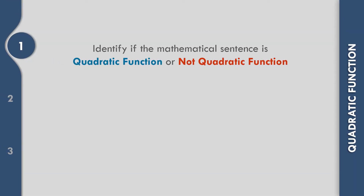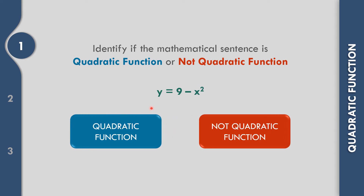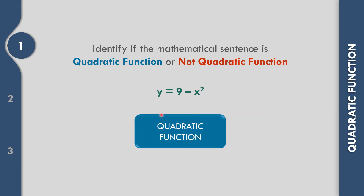In example number 1, let us identify if y equals 9 minus x squared is a quadratic function or not. This one is a quadratic function. Why? As you can see in the given, we have y, and the highest degree is 2.